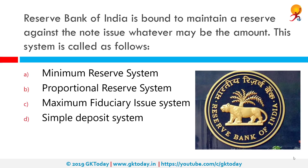The Reserve Bank of India is bound to maintain a reserve against the note issue, whatever may be the amount. This system is called the Minimum Reserve System, followed from 1956 onwards. Under the Minimum Reserve System, the RBI has to keep a minimum reserve of Rs. 200 crore comprising gold coin, gold bullion, and foreign currencies.